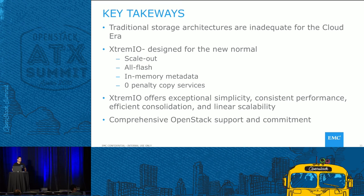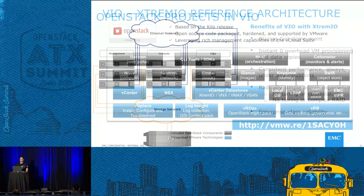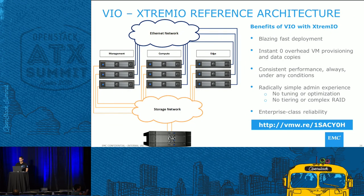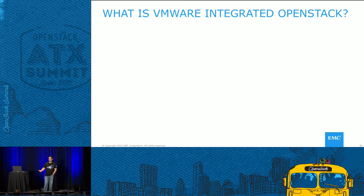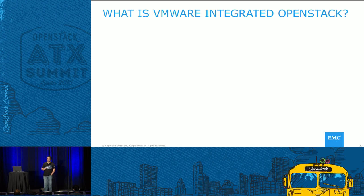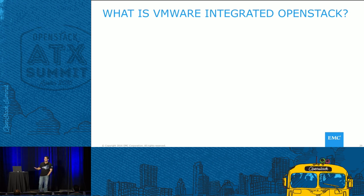Q: The 1.2 million IOPS that you mentioned — is it with deduplication? A: Deduplication has implications on IOPS. The 1.2 million IOPS is what you get running a workload at 8K block size, mixed 50/50 read-write in a 16-controller, 8-X-BRIK cluster. One X-BRIK would give you an eighth of that. So you can scale your performance predictably — 2 X-BRIKs will give you exactly twice the performance of 1 X-BRIK, which is really rare to see in a traditional storage environment.